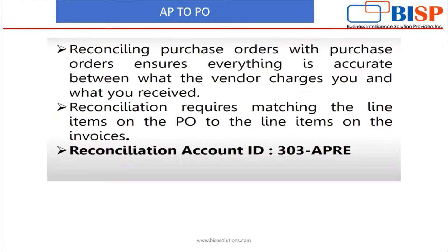Depending on the line items, description, whether it is a taxable item — omitted or taxable or non-taxable or rebate item — all these kinds of things are present under the PO and the invoice. Today under Oracle ARCS, we will be reconciling the account ID 303-APRE, which is my accounts payable to PO transaction matching reconciliation ID.